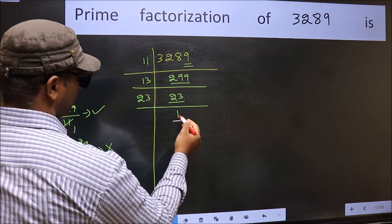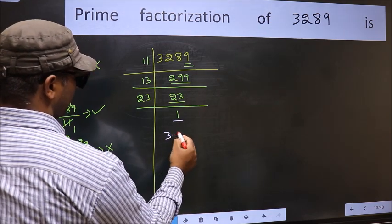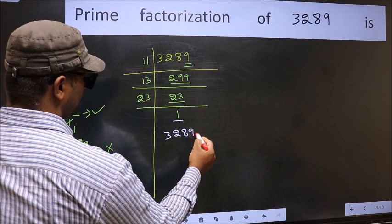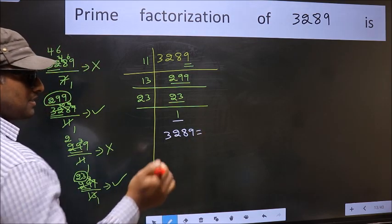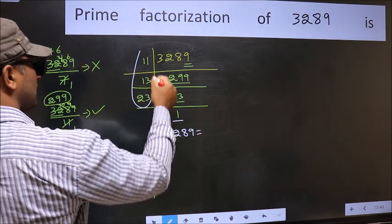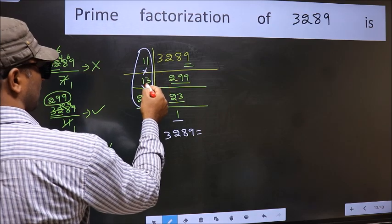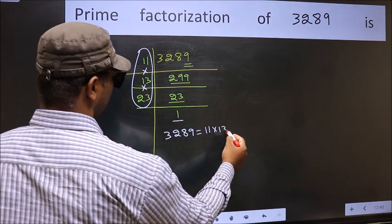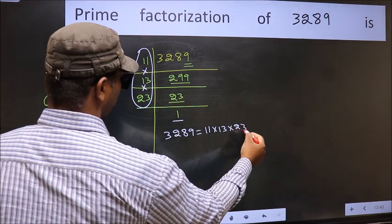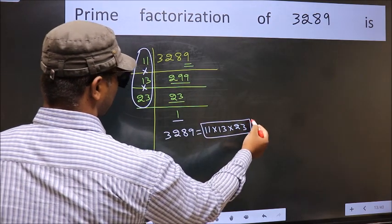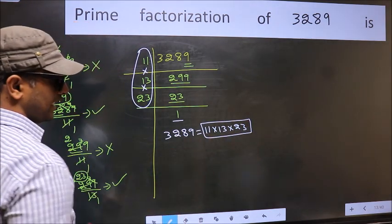So we got 1 here. So the prime factorization of 3289 is the product of these numbers. That is 11 into 13 into 23. This is the prime factorization of 3289.